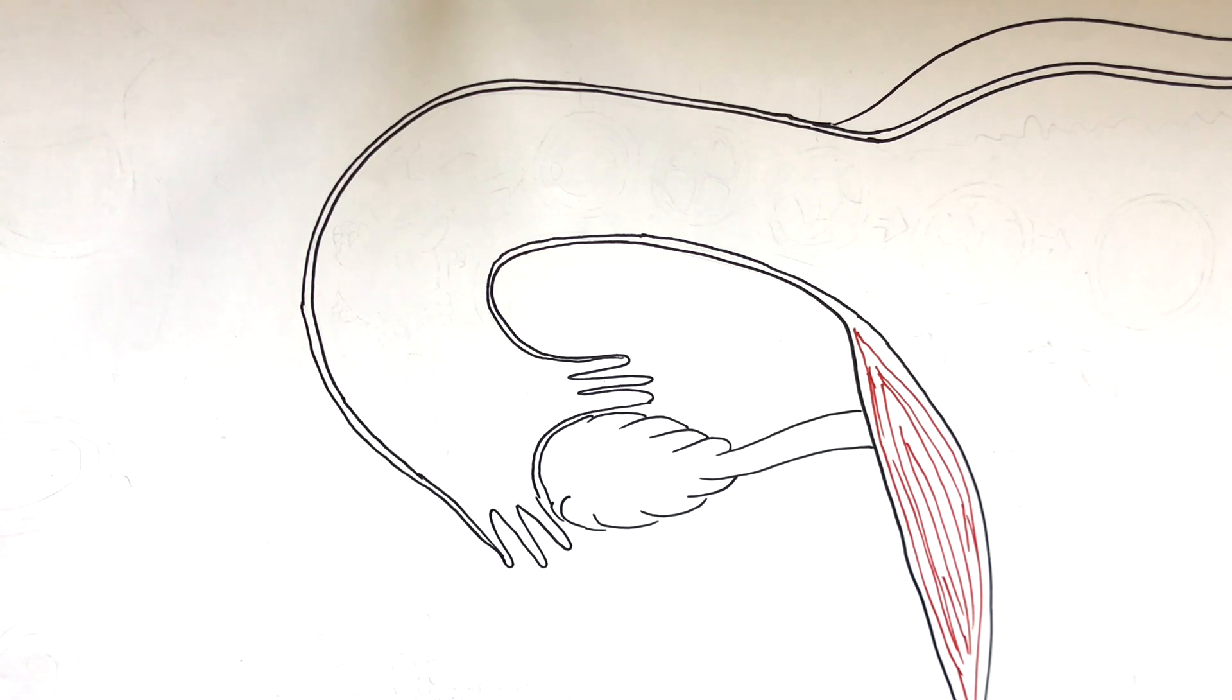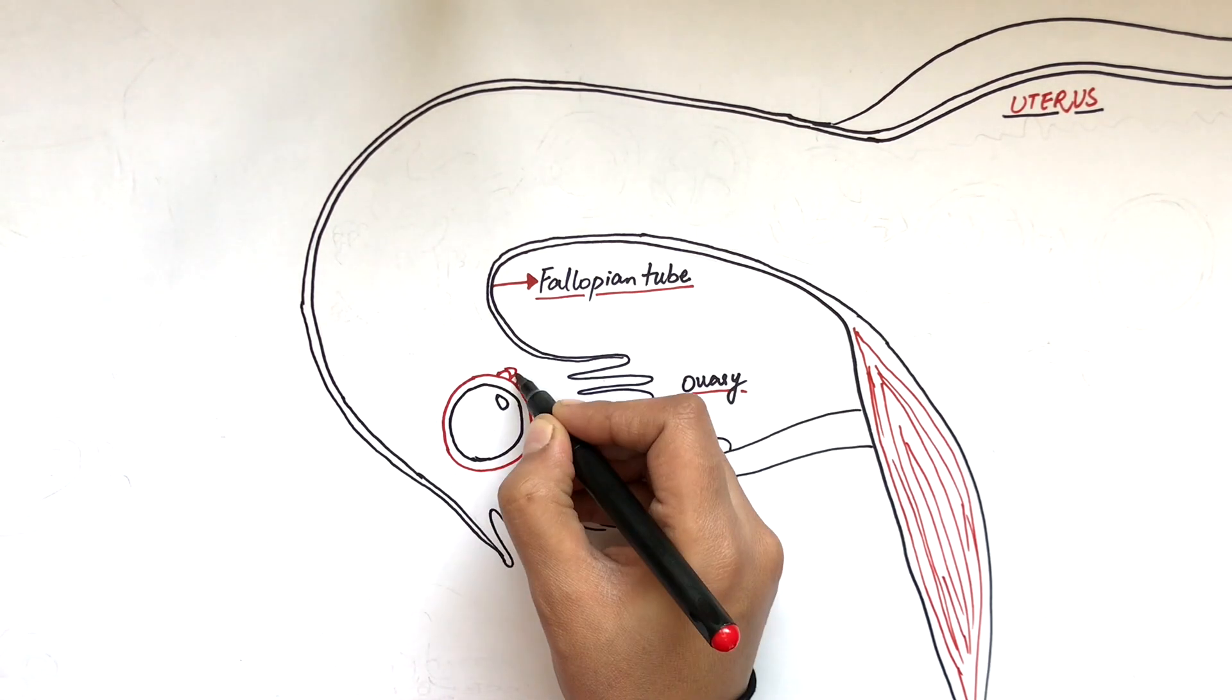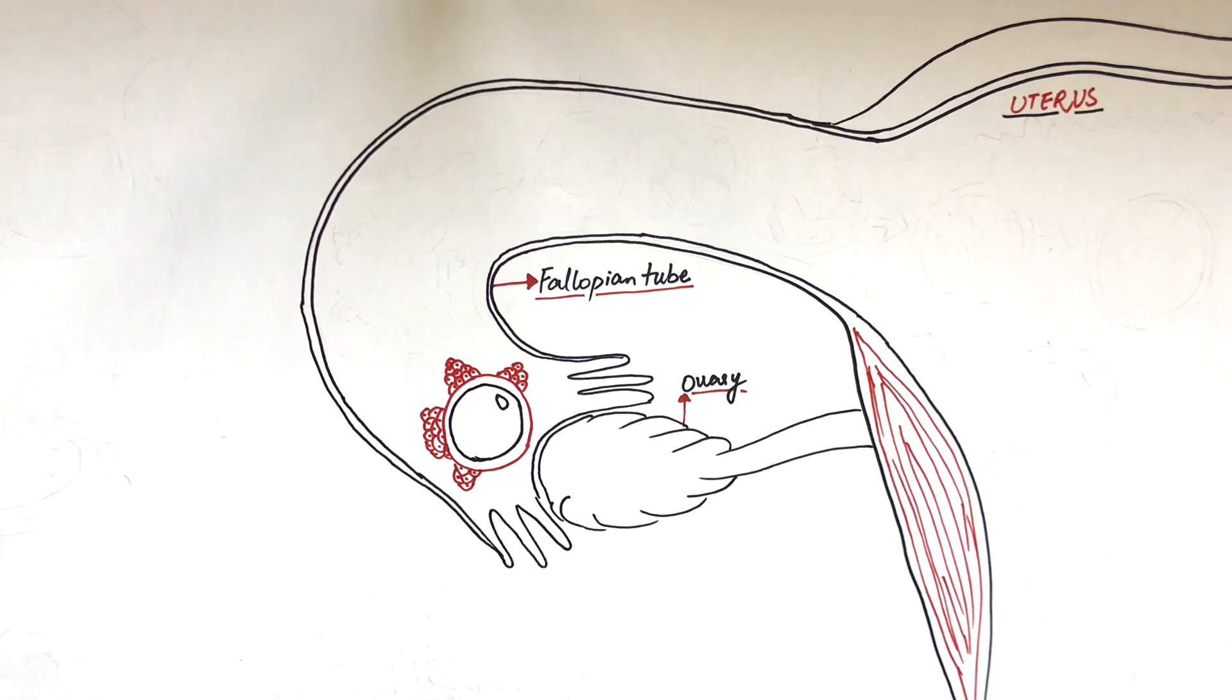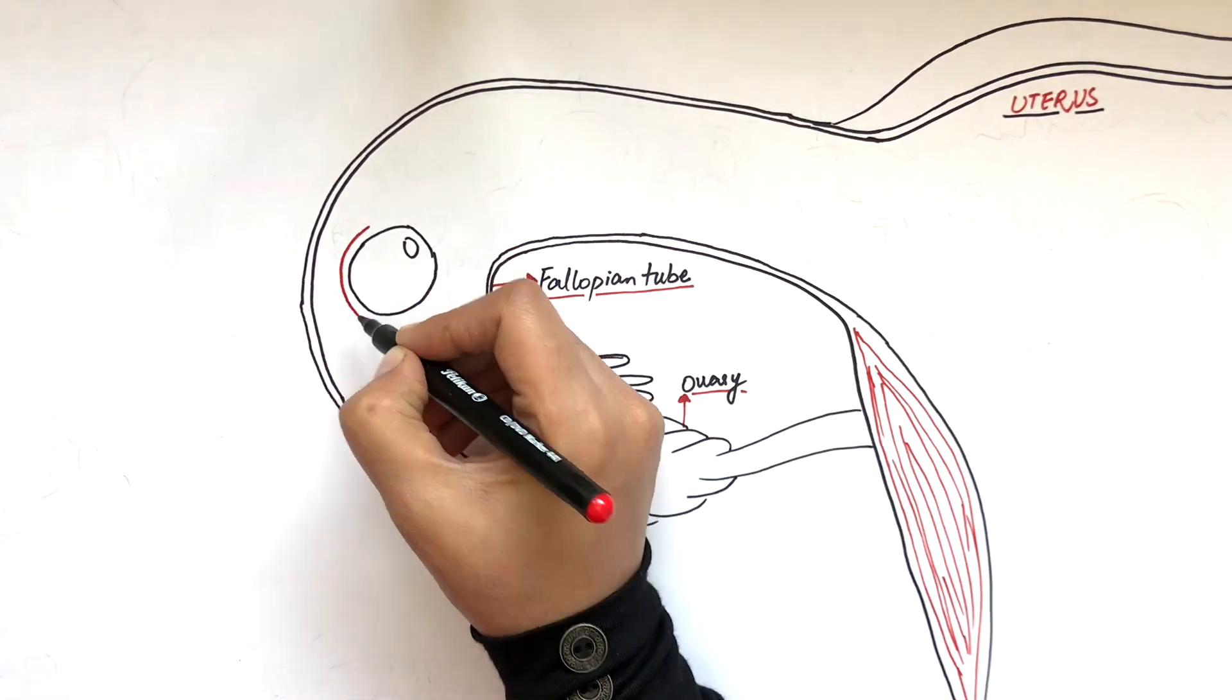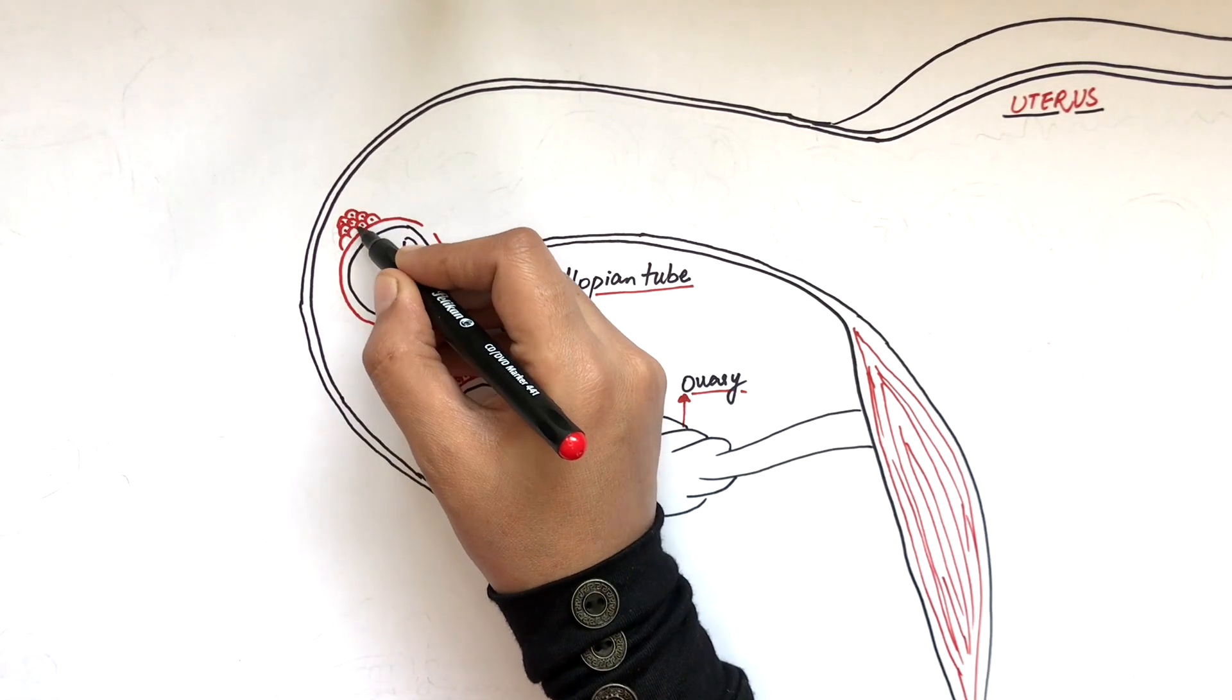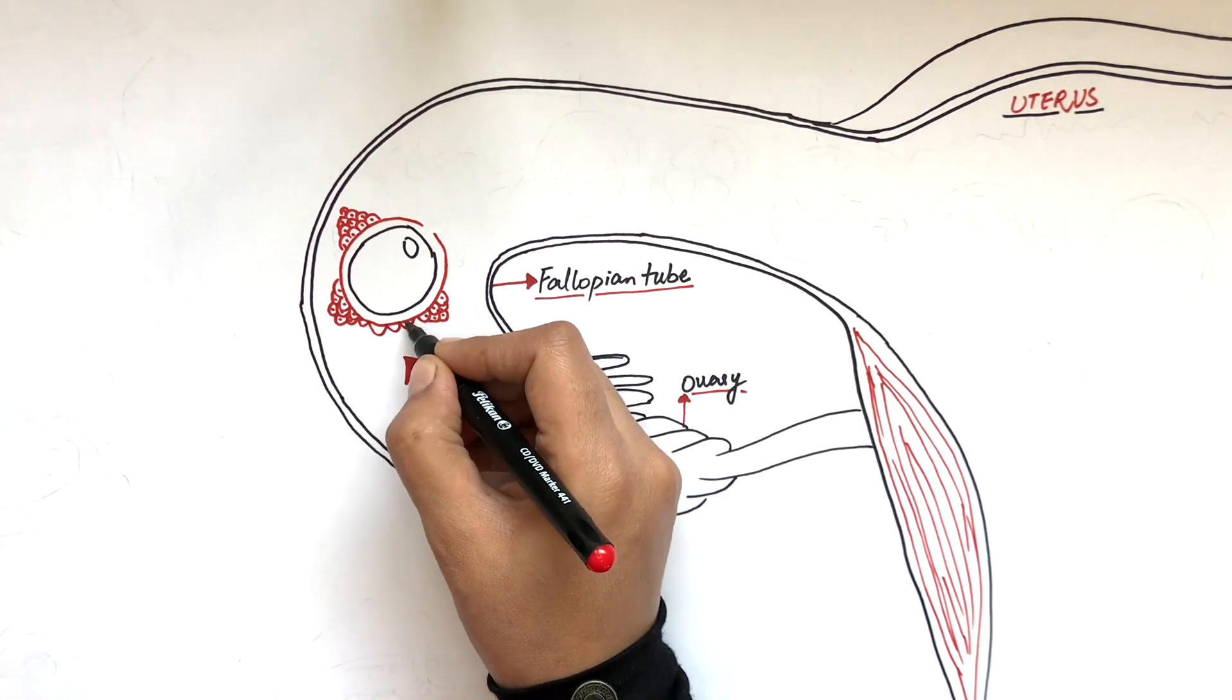Fertilization is a process of fusion between male sperm and female oocyte. This process takes place in the fallopian tube of the female reproductive system. Each month an egg or oocyte is released from the ovary and is taken up immediately into the fallopian tubes.